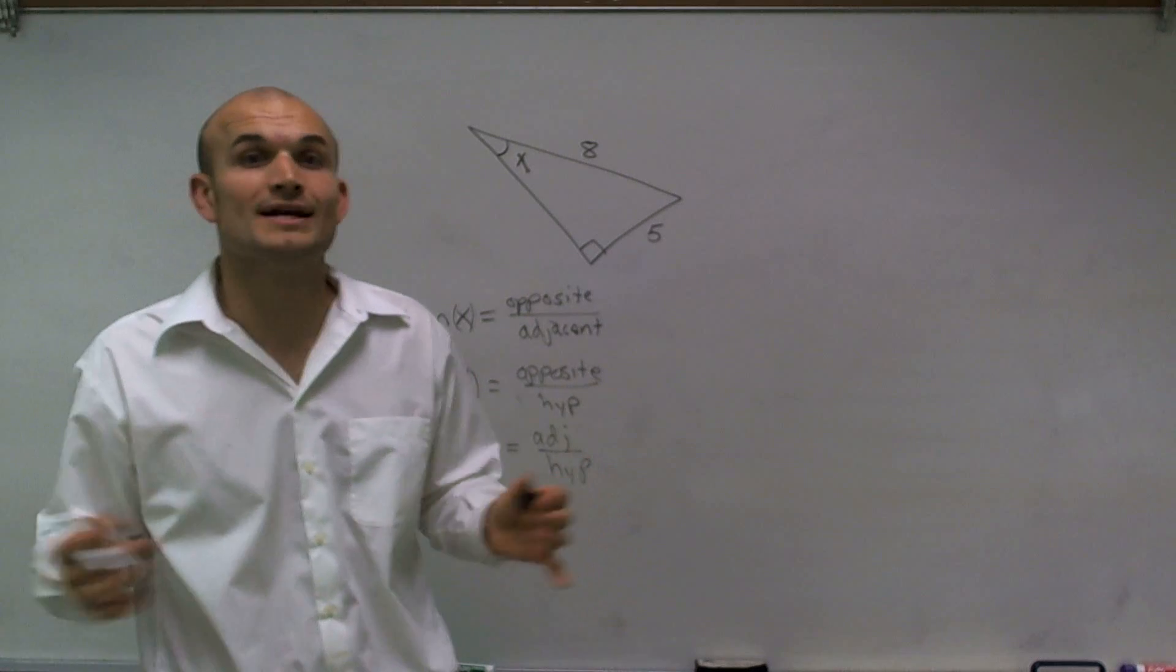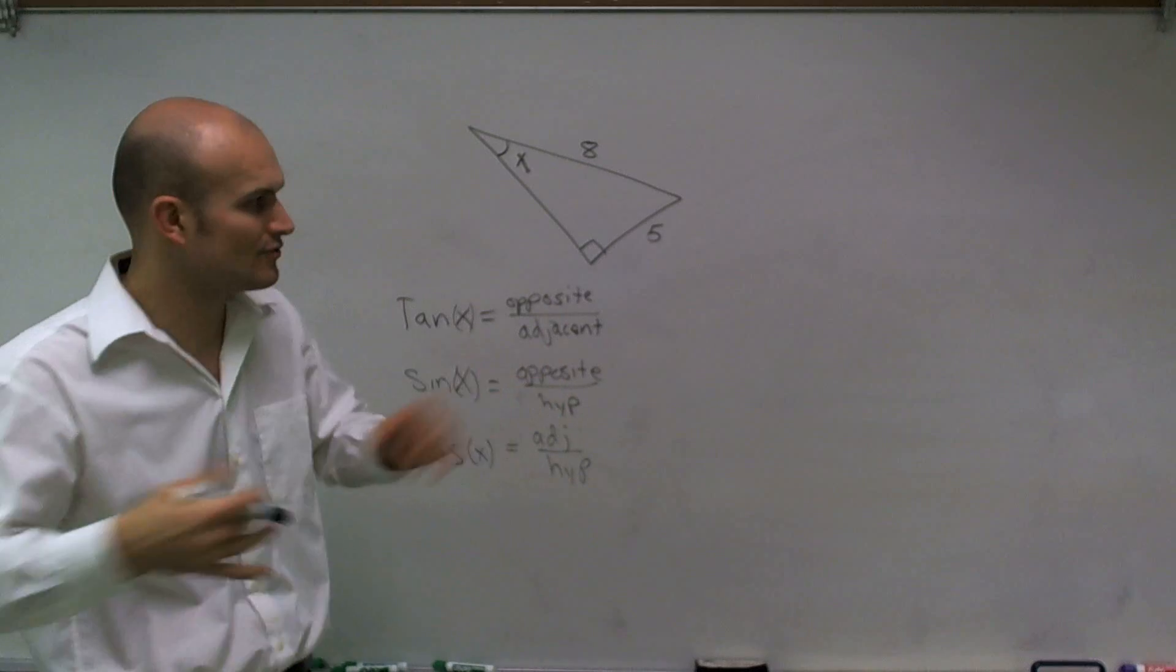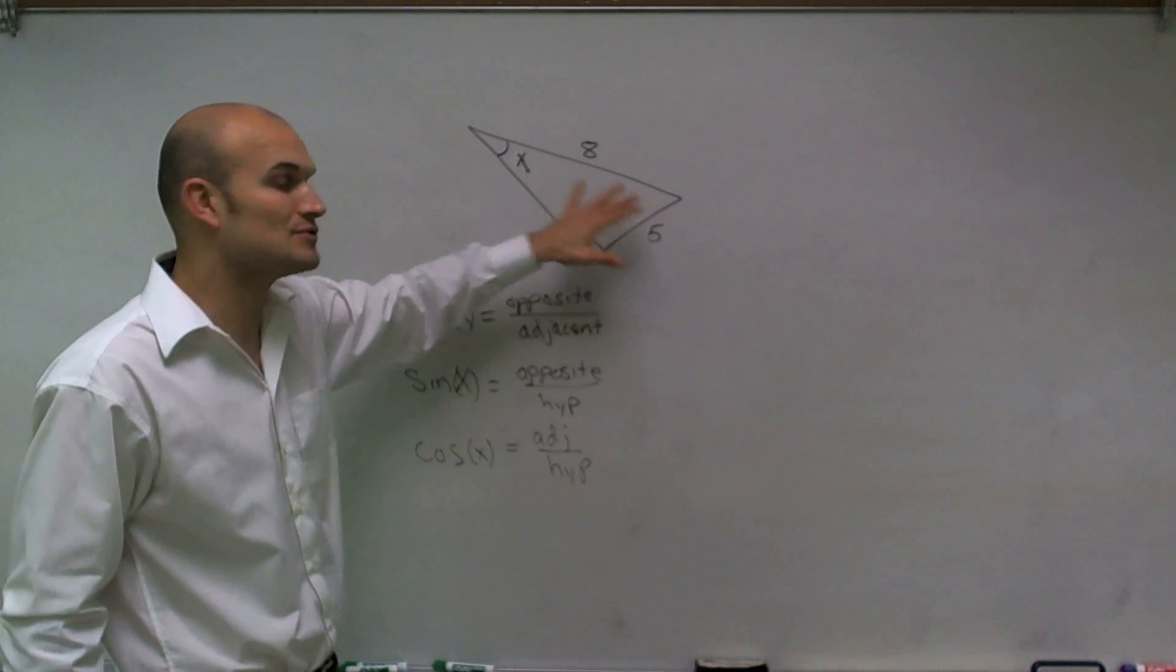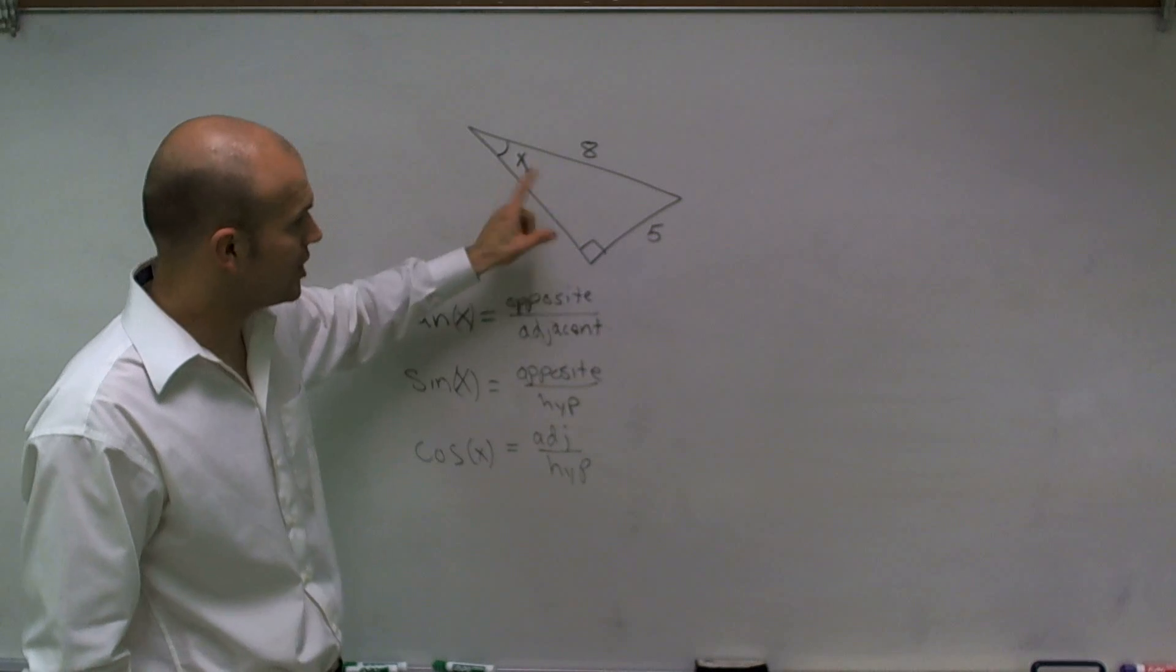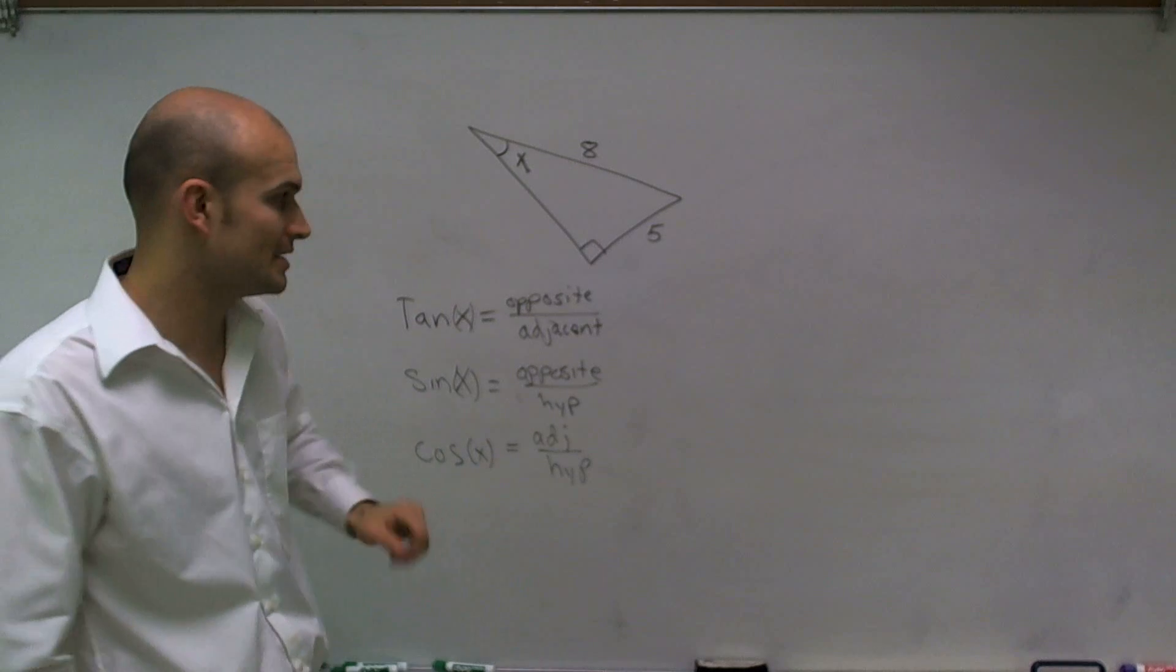So it doesn't matter what I do to my triangle. I can flip it, reflect it, do anything I want to it, wrinkle up, strangle it, throw it back up there. My hypotenuse is always going to be my longest leg or longest length of my triangle, and it's also going to be directly across from my 90-degree angle.